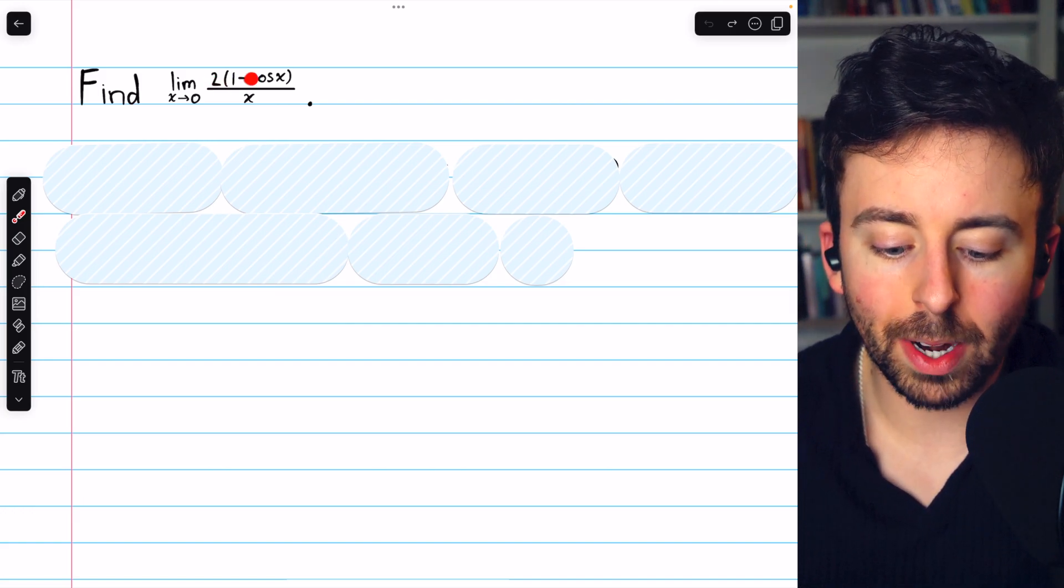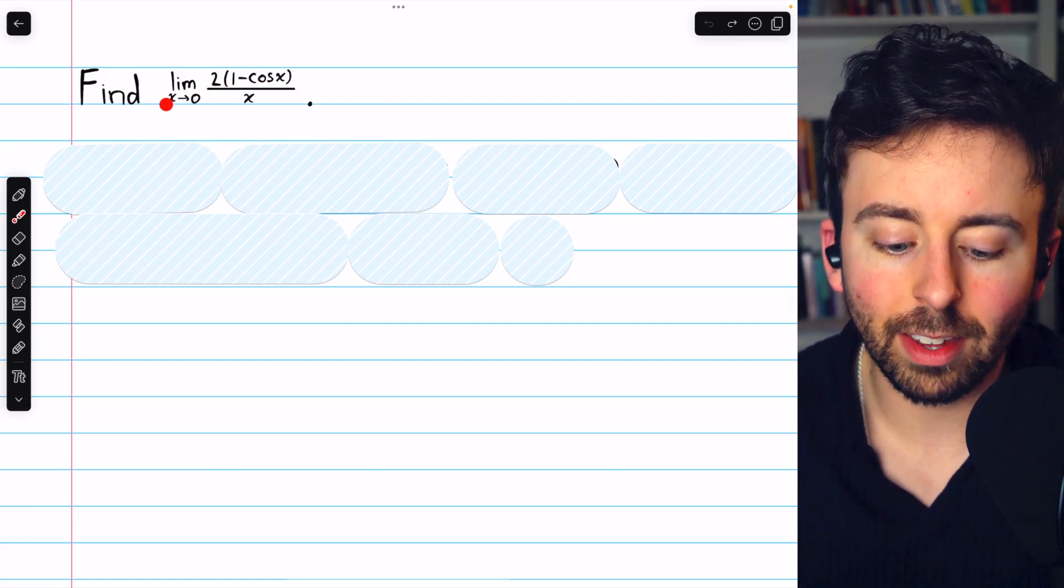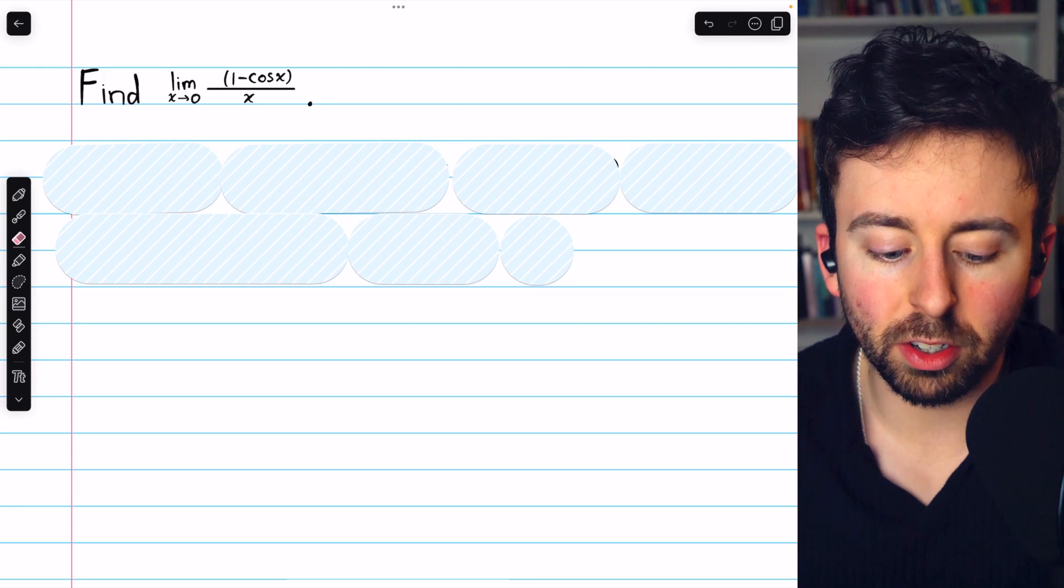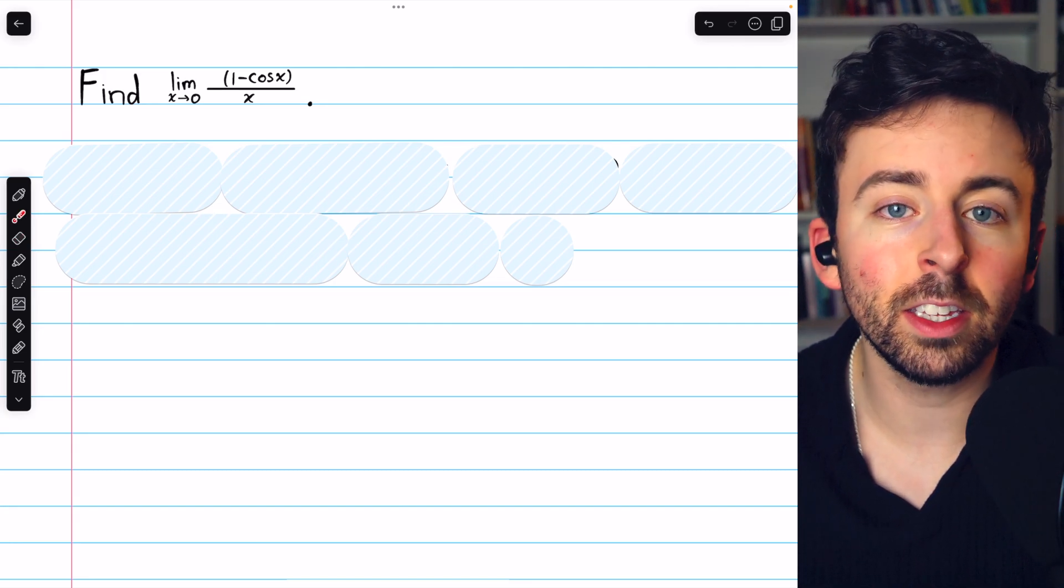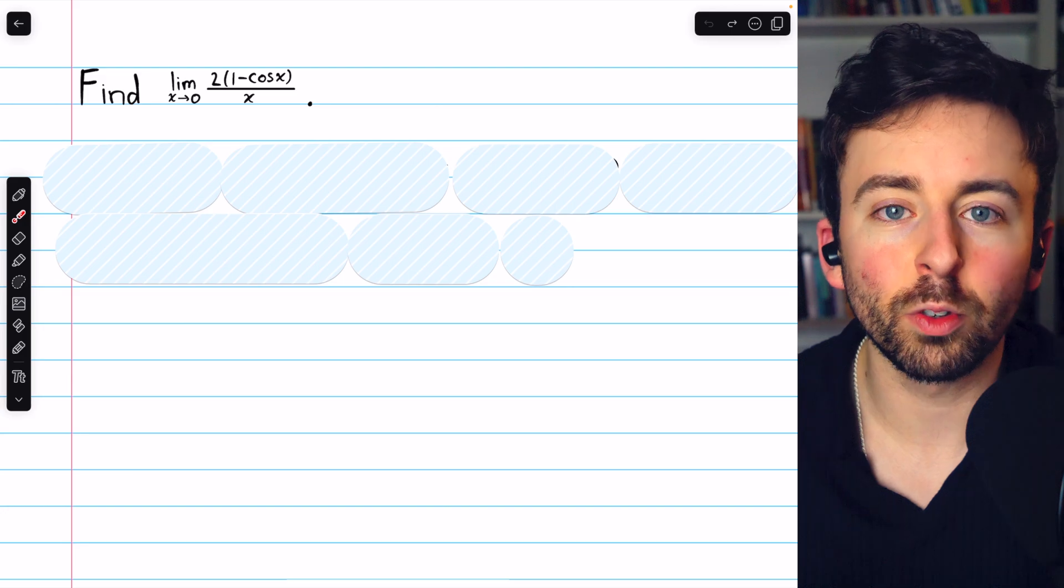Let's find the limit of 2 times 1 minus cosine x over x as x approaches 0. Without the 2, this is a pretty famous limit that you might know the value of, in which case this problem is trivial.